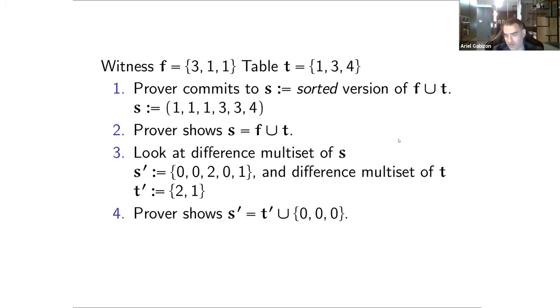So what we see is that wherever there's a repetition, we just get zero. And since both S and T are sorted, when we're switching element, then the difference in S and T should be the same difference. So what follows is that the claim is true if and only if as multi-sets S prime is equal to T prime union as many zeros as like the size of S minus the size of T. That's maybe a little to digest.